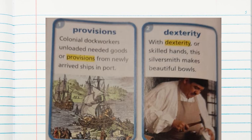Provisions: colonial dock workers unloaded needed goods or provisions from newly arrived ships and imports. Dexterity: with dexterity, or skilled hands, the silversmith makes beautiful bowls.